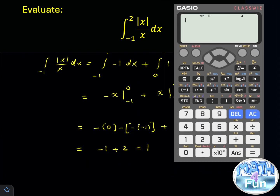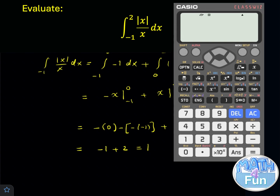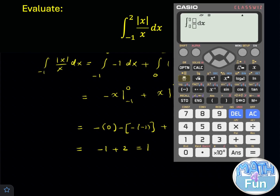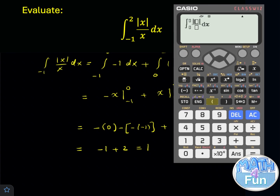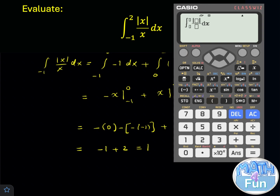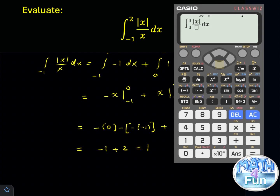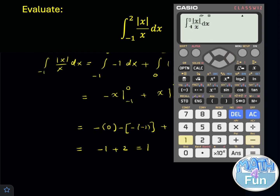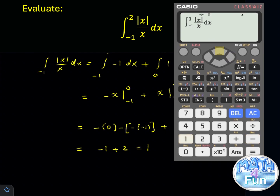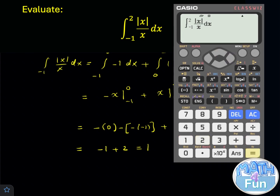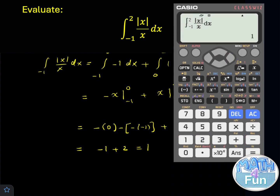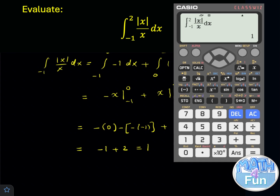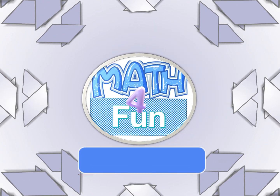To confirm using a calculator: press integral, enter the fraction using the absolute value of x over x, set the boundaries from minus 1 to 2, press equal, and the answer is 1.